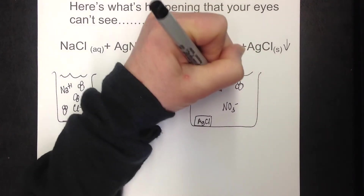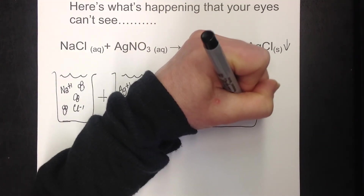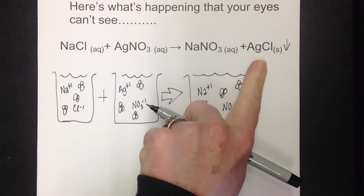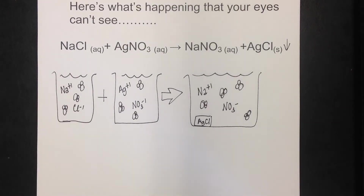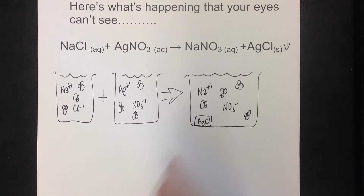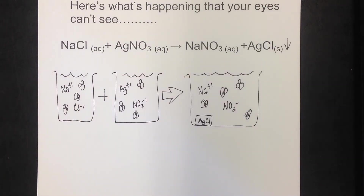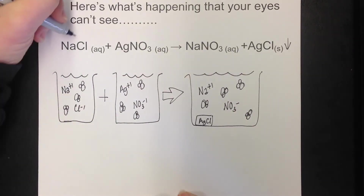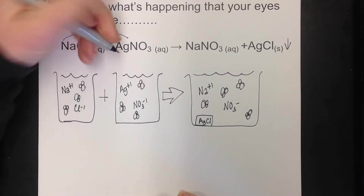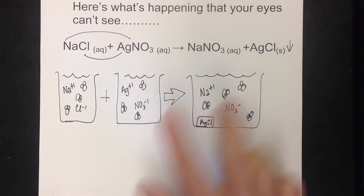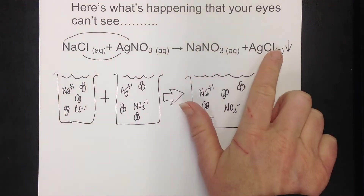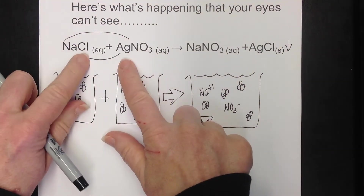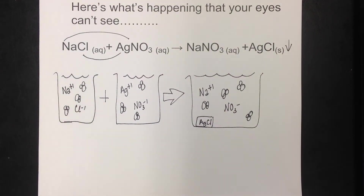Initially when you mix the solutions, they might look cloudy. If you leave them alone, over time the precipitate settles to the bottom. I don't expect you to know yet which compound will be the solid and which will be aqueous — that comes in our solubility lesson. The important thing is seeing that the sodiums and nitrates met up, and the silvers and chlorides met up, giving us two products.